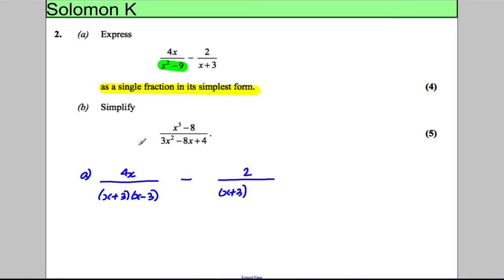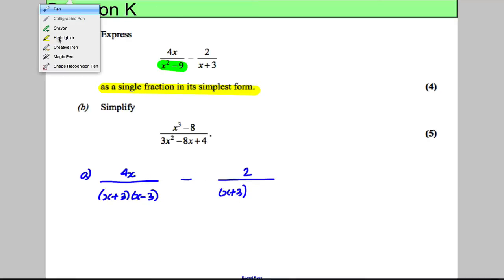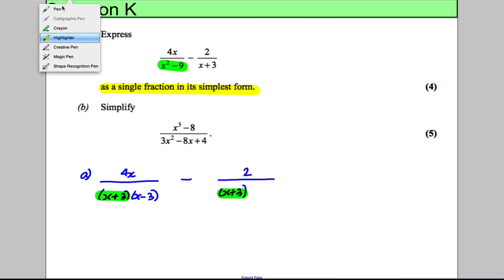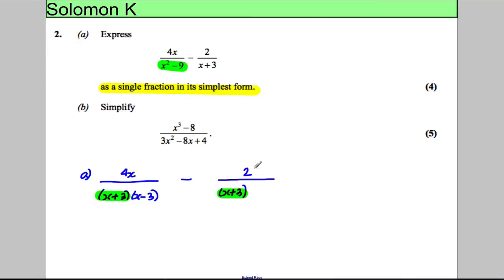In order to add or subtract fractions you must make the denominators the same. They both have a common factor of (x + 3), whereas the first fraction also has a factor of (x - 3). So you're going to have to multiply the second fraction on the top and the bottom by (x - 3).